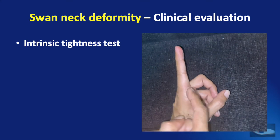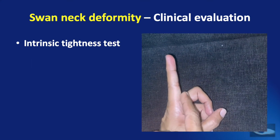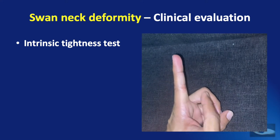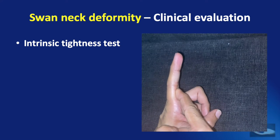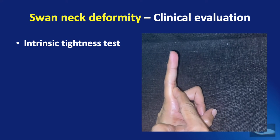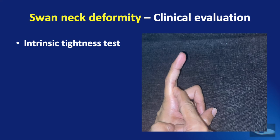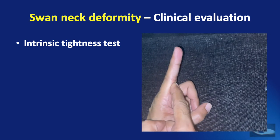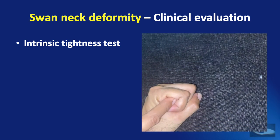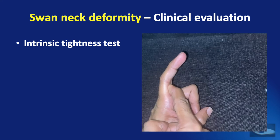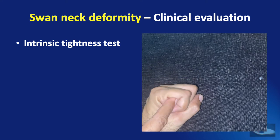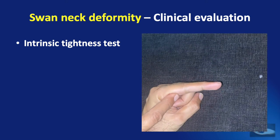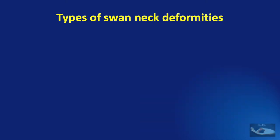In the intrinsic tightness test, when we hold the patient's metacarpophalangeal joint in extension, they will not be able to flex — or will find it difficult to flex — the proximal interphalangeal joint. However, when the metacarpophalangeal joint is kept flexed, they will be able to very easily flex the proximal interphalangeal joint. This is indicative of tightness of the intrinsics.